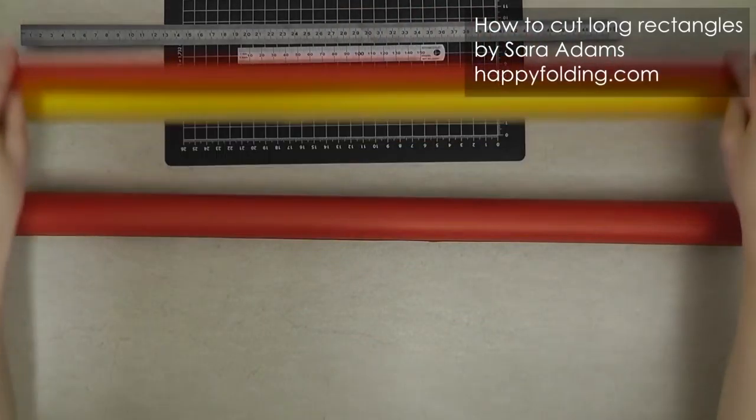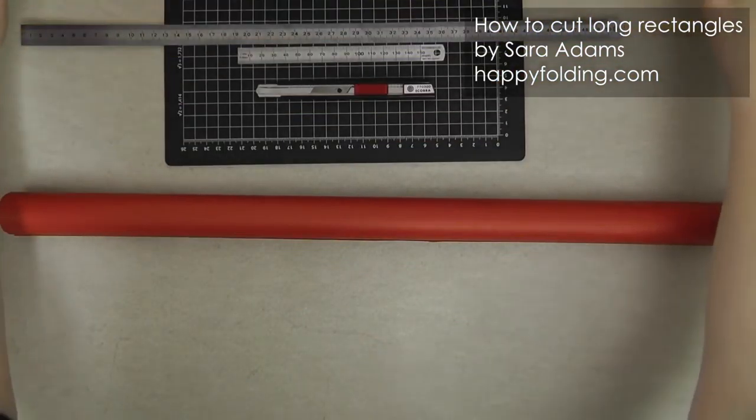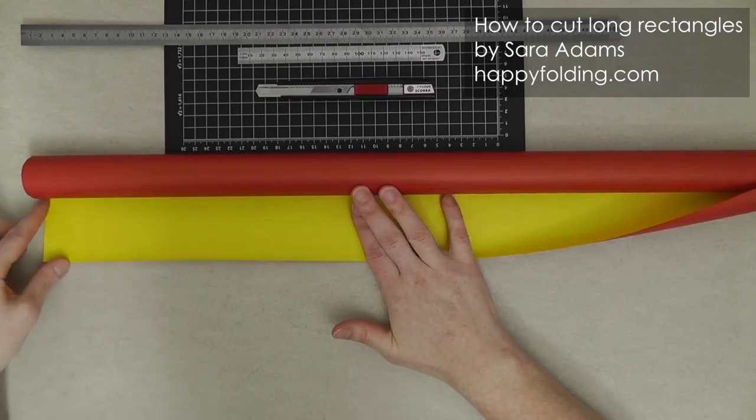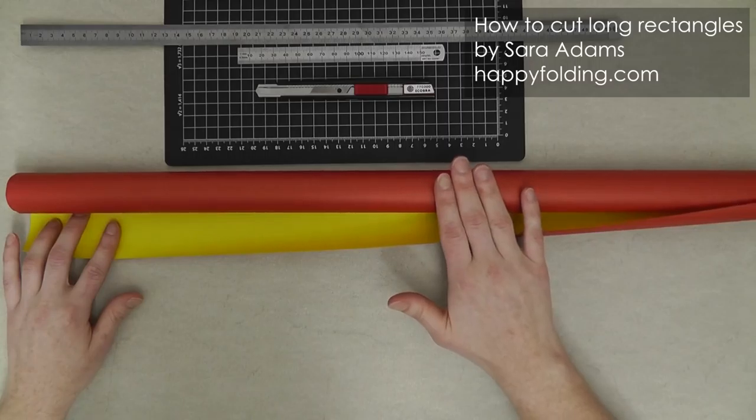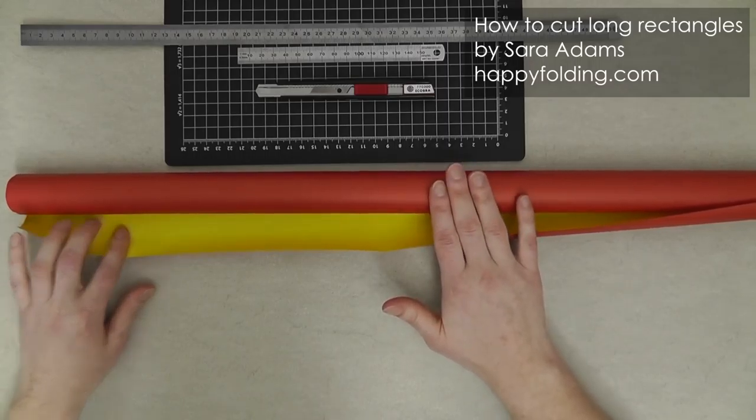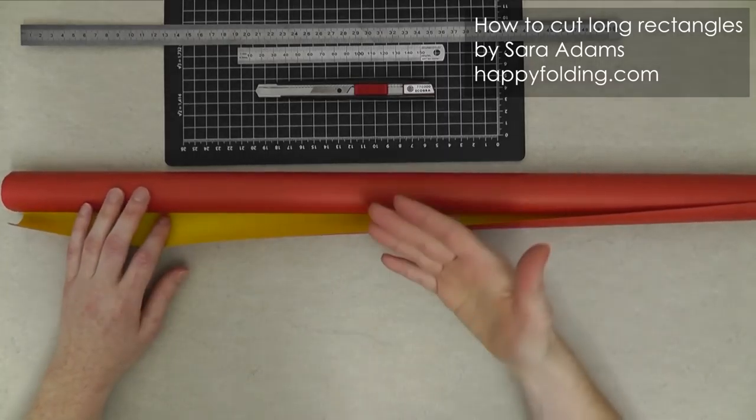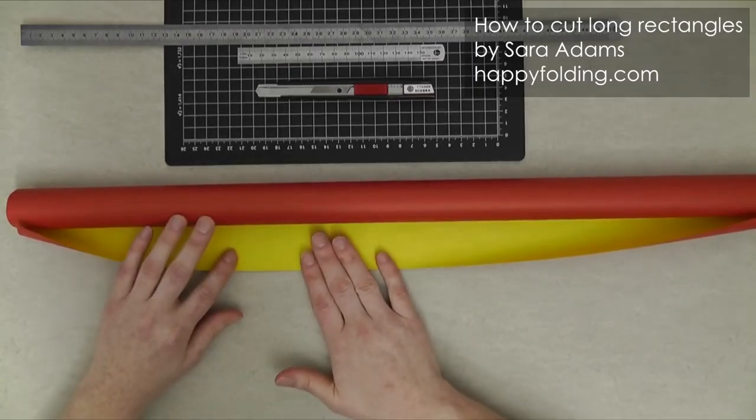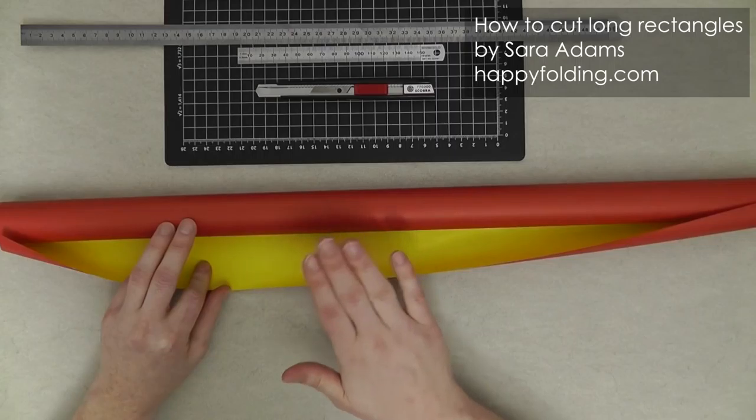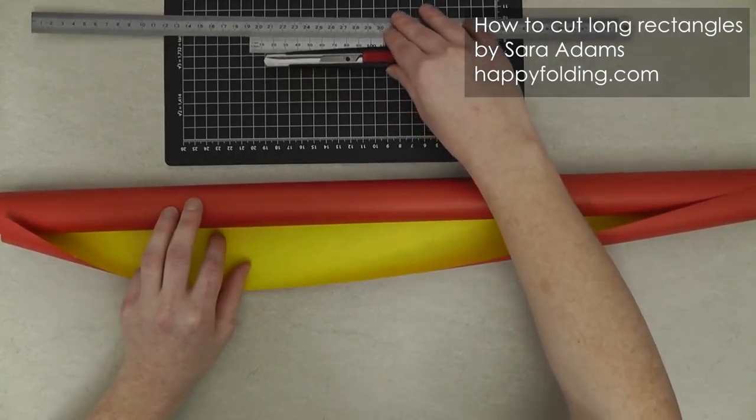Now to cut this long rectangle, the first thing you need is a roll of wrapping paper that has a 90 degree angle and a straight edge throughout. If you buy a new roll of paper, you will have that already, but if you've previously used the roll and just cut with your scissors like that, it's not going to be perfectly straight anymore. So I'm going to quickly show you how to get a straight edge.